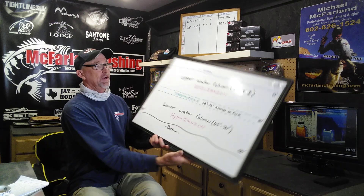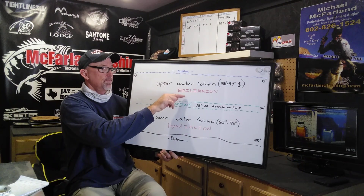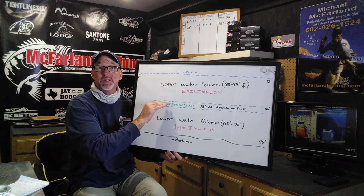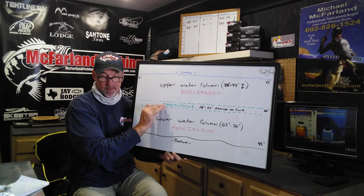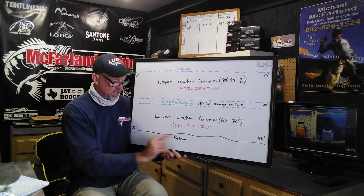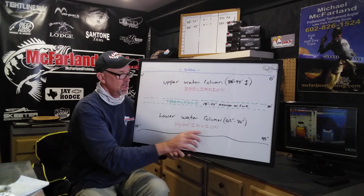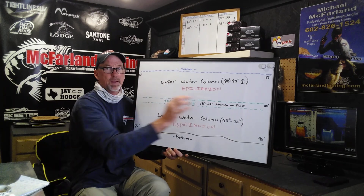What is a thermocline? A thermocline is a steep temperature gradient in a body of water marked by a layer above and below. Those layers above and below are different temperatures. In essence, we've got three layers of water. We have an upper layer, an upper water column, the thermocline itself which tends to have its own temperature gradient, and then a water column below. Two water columns separated by a temperature gradient.